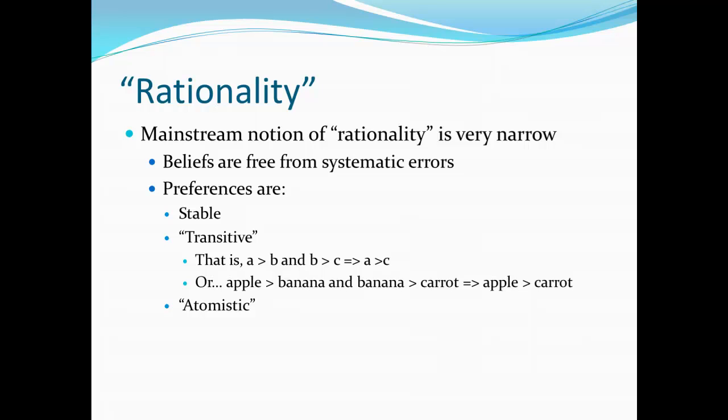Finally, we'd say that preferences are atomistic — that is, more or less selfish. We want to be careful here, because when we use the term selfish it has a naturally negative connotation, but that's not necessarily the case. All we really mean is that people are neither magnanimous nor spiteful. People aren't going to go out of their way to help others or particularly care about others' well-being, but at the same time they're not going to go out of their way to hurt others either. People simply don't care about others' well-being, either positively or negatively.